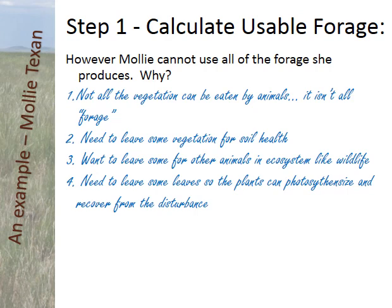Secondly, you have to leave some vegetation behind for soil health. Soil is a living entity that has organic matter for microbes and for holding water, so you need vegetation to hold the topsoil and keep it healthy. Third, there are many other animals in the ecosystem besides livestock — insects, wildlife from large ungulates like deer and elk to rodents — and you need to leave forage for them. Finally, plants themselves need photosynthetic material to survive disturbances and get usable carbon, so you need to leave some leaves behind for the plants.